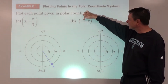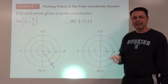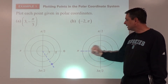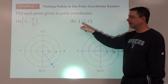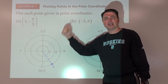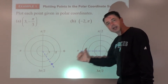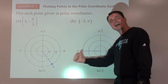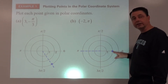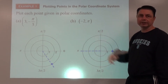Part b: negative two as a directed distance, comma pi as the angle. We go to pi first — there's pi — and then it says go negative two, which means don't go that way; negative means go the opposite direction. So instead of going this way, we go the exact opposite direction one, two units, and we plot the point right there.